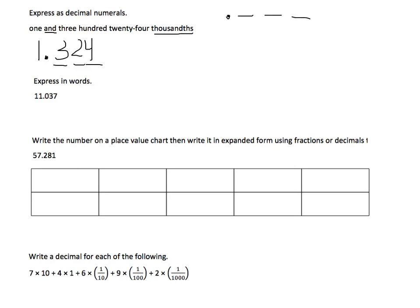Number 2b asks you to express the number that they gave you in standard form in words. So the number reads 11 and 37 thousandths, and that's exactly what I would write in words.